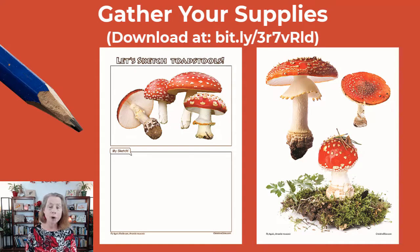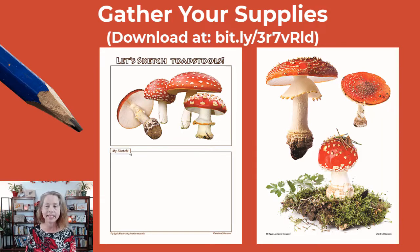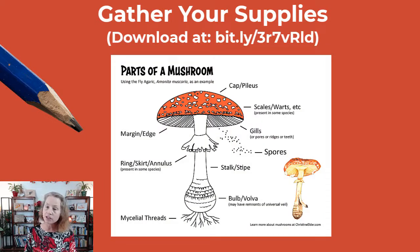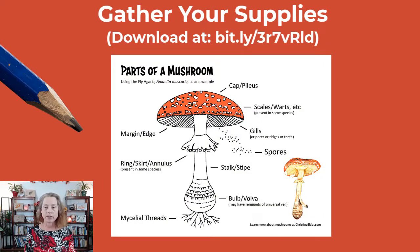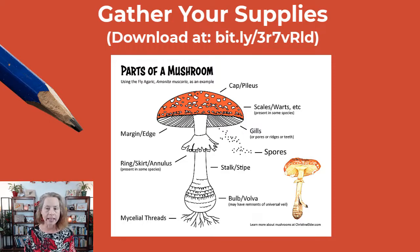To get the most out of today's workshop, I encourage you to download your supplies, which includes a two-page handout of images of the Fly Agaric or Amanita muscaria. There's also a handout on the parts of the mushroom. You'll want some extra paper and sketching pencils, and perhaps some colored pencils if you want to add the red cap and green vegetation.